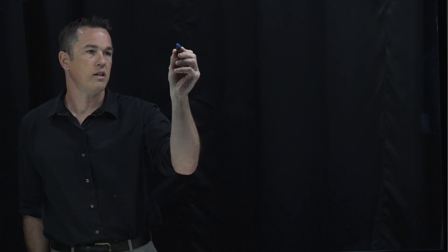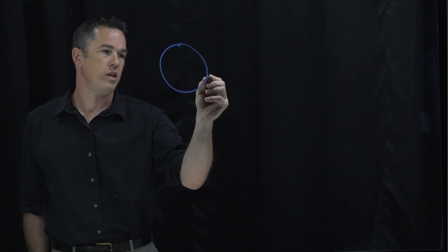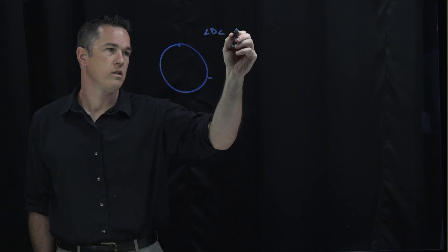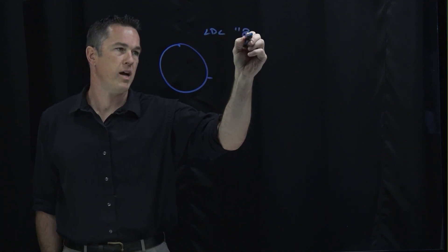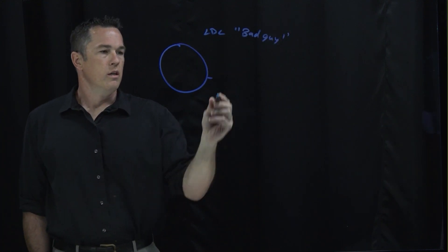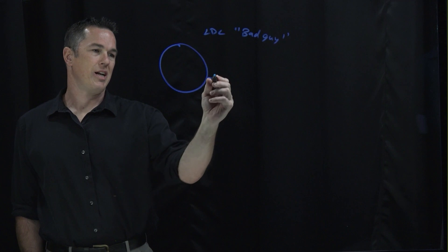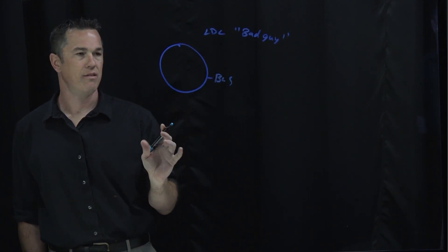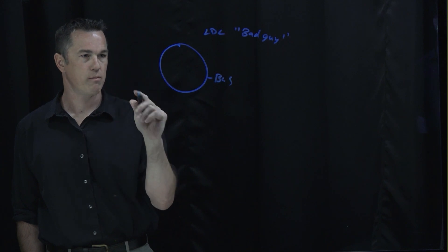So first things first, LDL is a protein structure, and this is the one they deem the bad guy. So I liken it to a structure kind of like a bus, and inside this bus we have a ton of things. I'm just going to briefly go over some of the major ones.